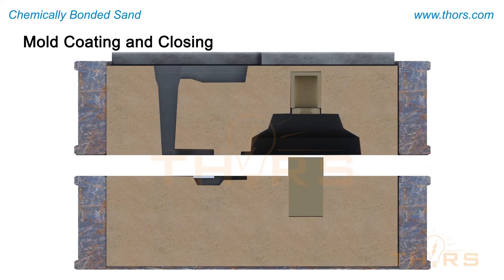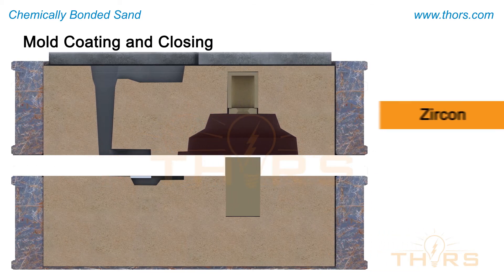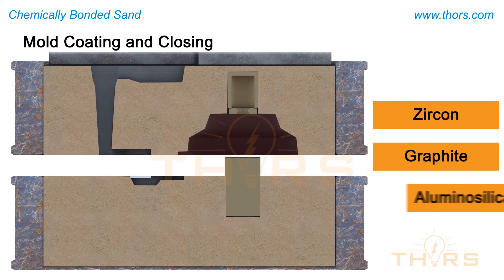Then, depending on the casting design and the casting metal being used, the mold is coated with refractory materials such as zircon, graphite, or aluminosilicate.